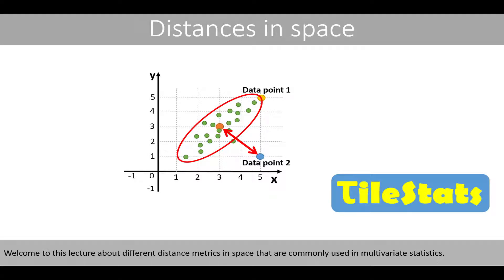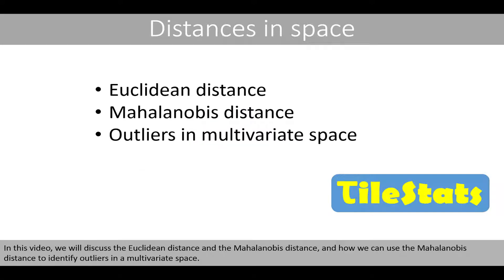Welcome to this lecture about different distance metrics in space that are commonly used in multivariate statistics. In this video we will discuss the Euclidean distance and the Mahalanobis distance and how we can use the Mahalanobis distance to identify outliers in the multivariate space.